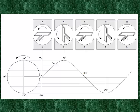As the coil rotates counter-clockwise in this vertical position, it begins to cut the field lines, and it reaches a maximum when it is parallel — that is, 90 degrees from its initial position.